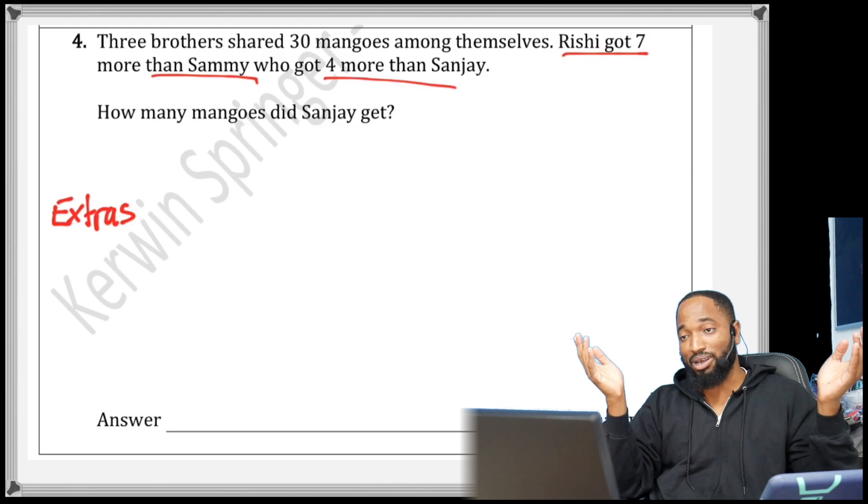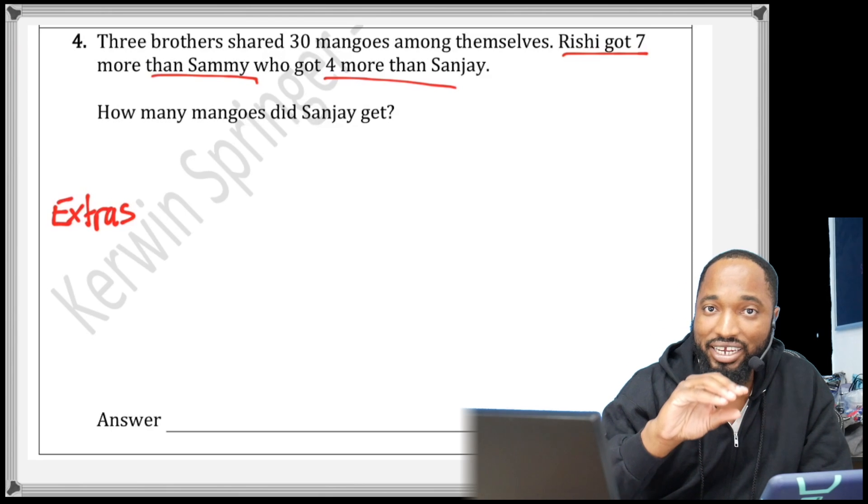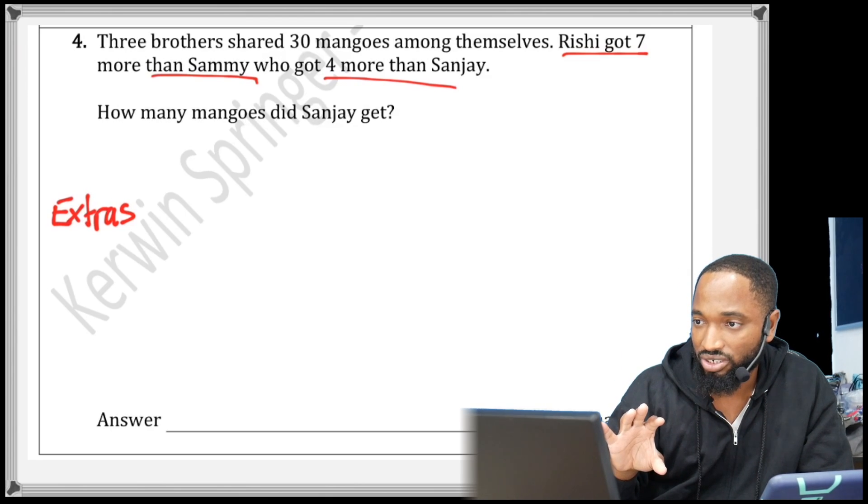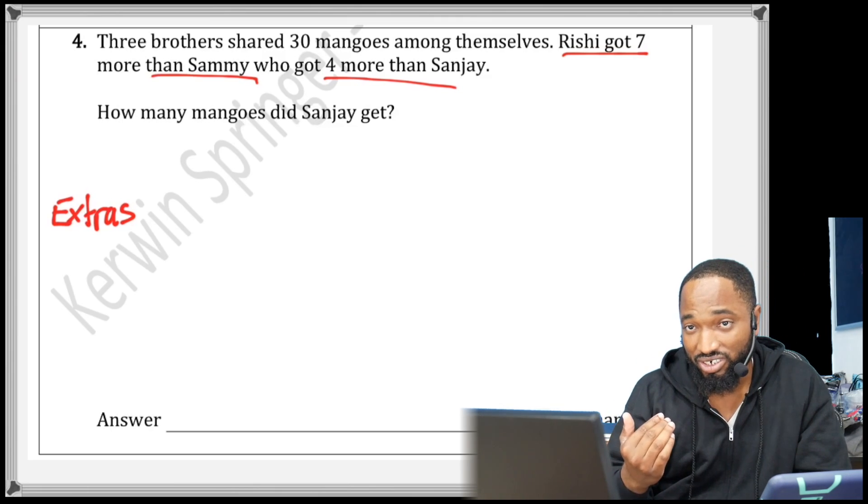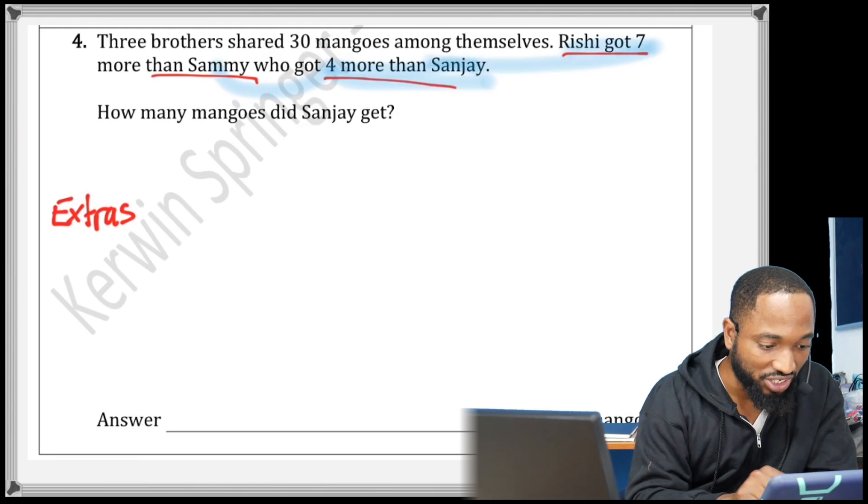Really? What's going on with them brothers? Maybe some like mangoes more than some. Anyhow, so Sanjay ain't getting no extra. Sanjay had the equal share after you take out the extra and you divide. Sammy got 4 more than Sanjay.